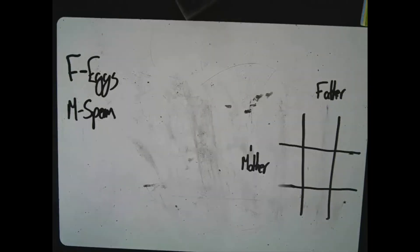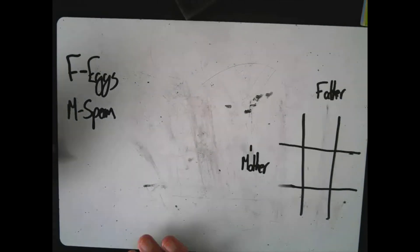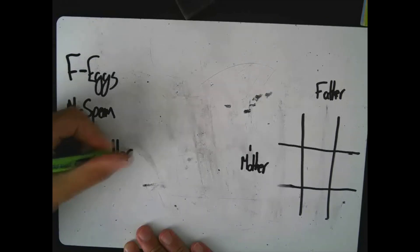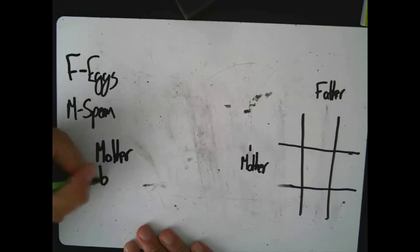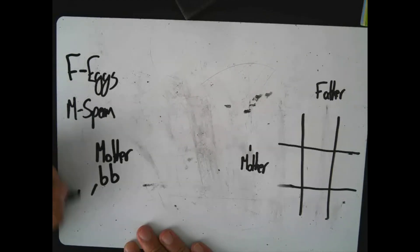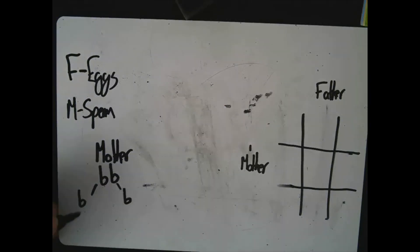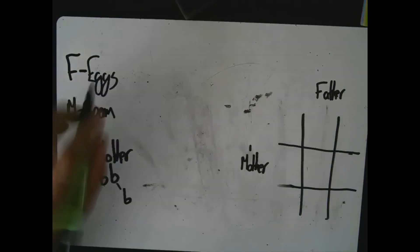Each of these segments contains a gene for a particular characteristic. In this case we're going to talk about eye colour. If the mother has blue eyes she's going to carry two alleles — a lowercase b and a lowercase b. This means they've got blue eyes and they're recessive because they're lowercase.